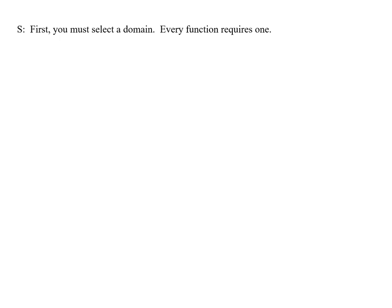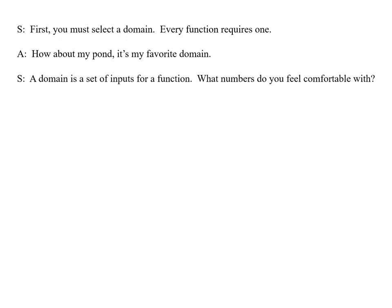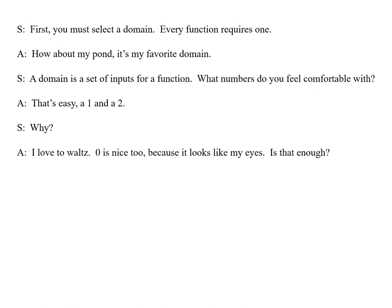First, you must select a domain. Every function requires one. How about my pond? It's my favorite domain. A domain is a set of inputs for a function. What numbers do you feel comfortable with? That's easy. A 1 and a 2. Why? I love to waltz. Zero is nice, too, because it looks like my eyes. Is that enough?